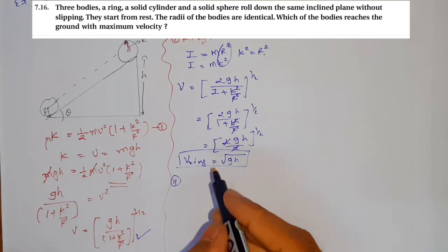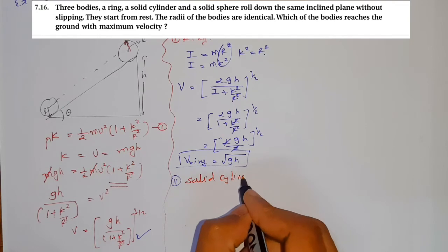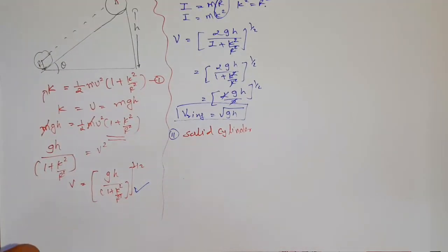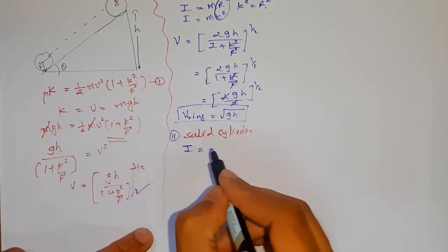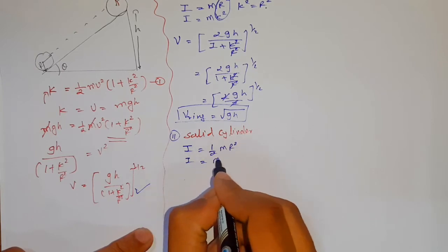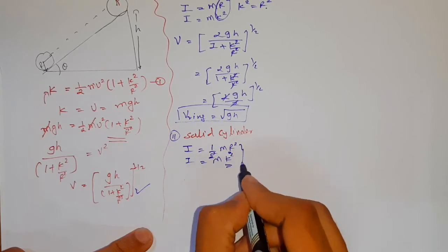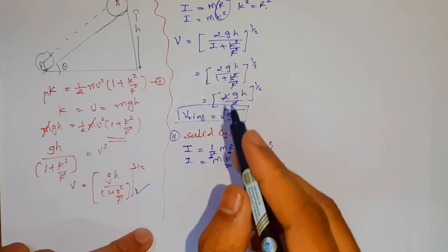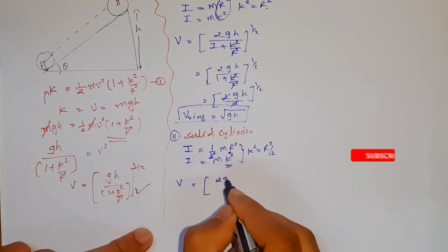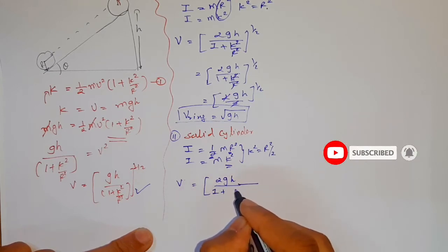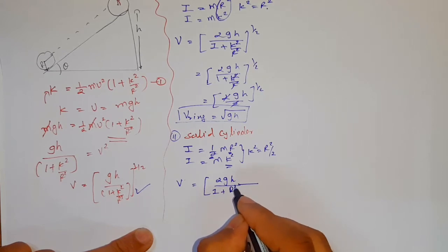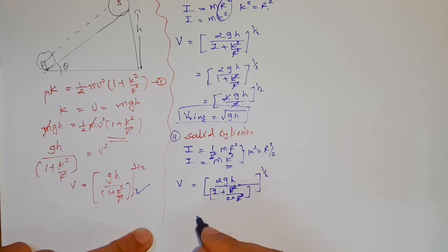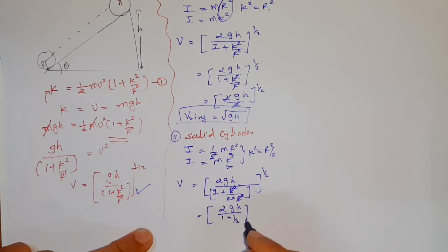Now for the solid cylinder, the moment of inertia is I = ½mr². Comparing with I = mk², we get k² = r²/2. Substituting into the formula: v = √(2gh / (1 + (r²/2)/r²)) = √(2gh / (1 + ½)). The r² cancels out.